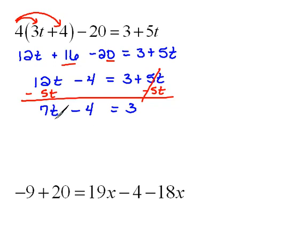Now remember, we're getting t alone, we're solving for t. So let's move our negative 4 by doing the opposite, which would be to add 4 to both sides. Now we have 7t equals 3 and 4 is 7.